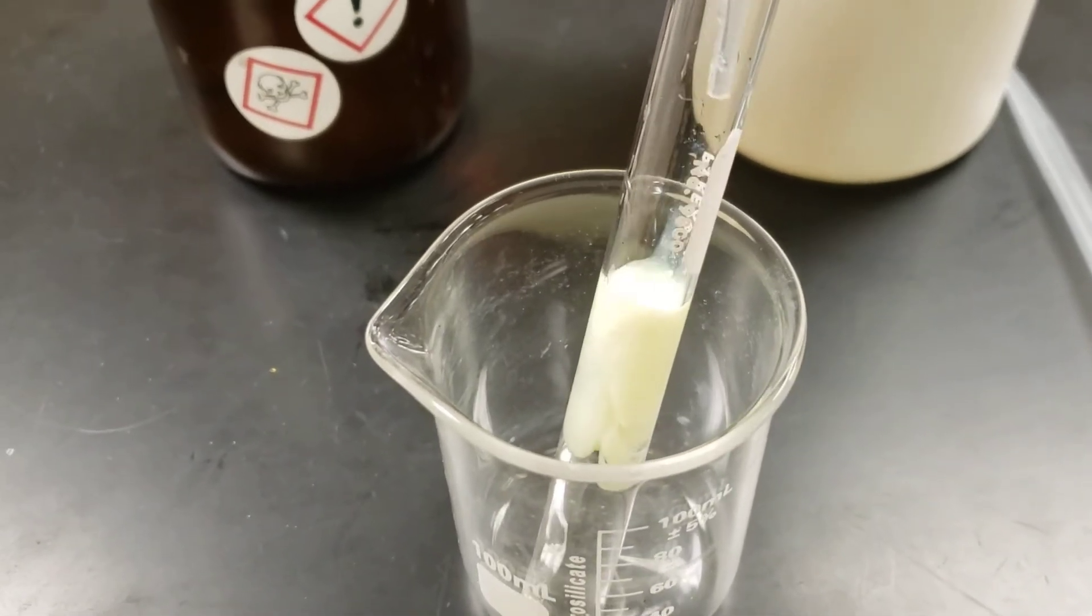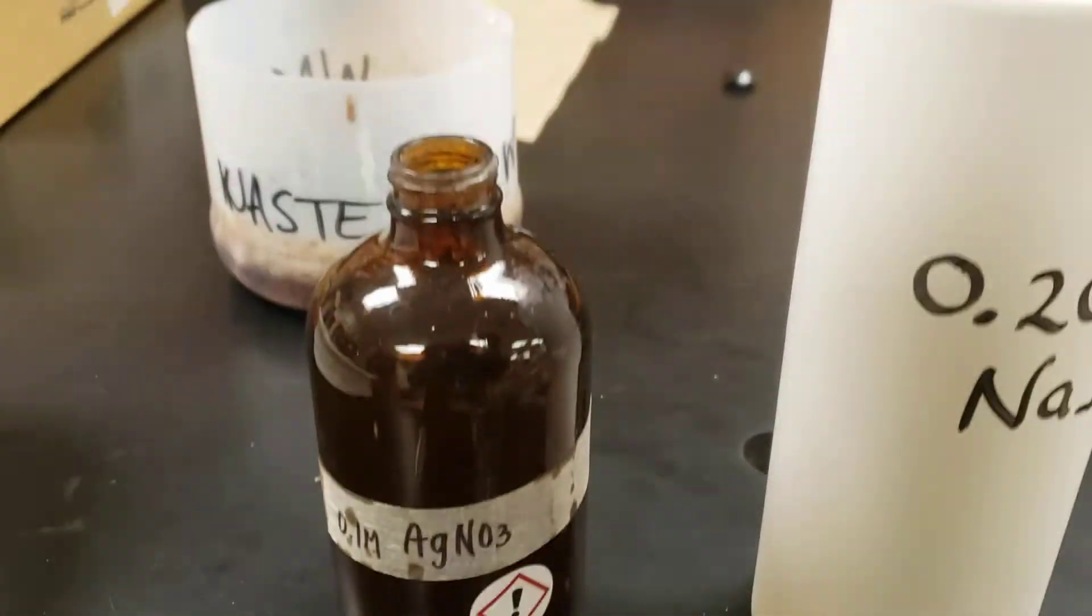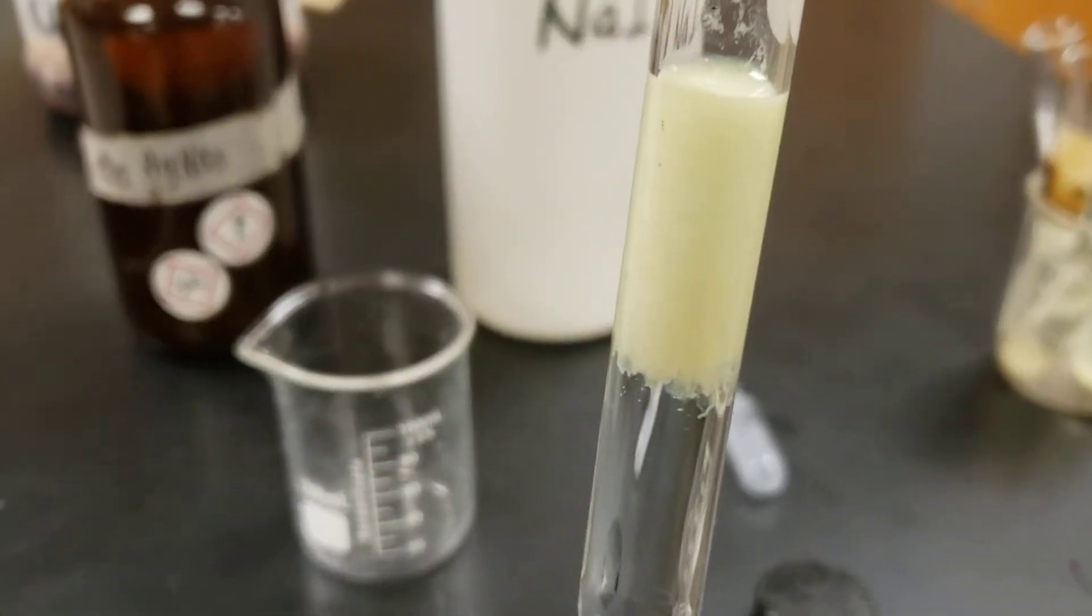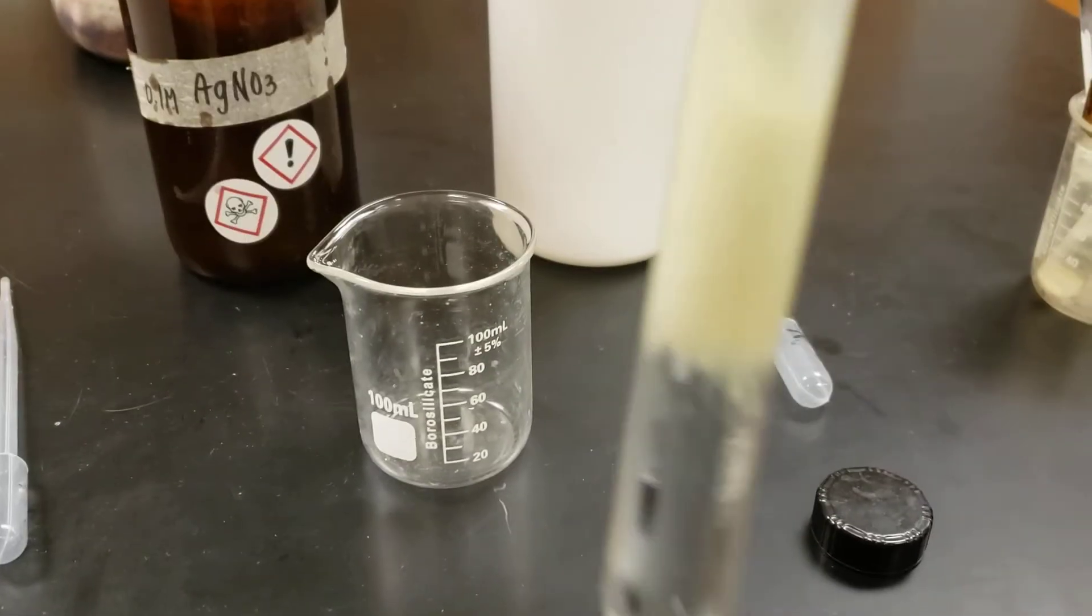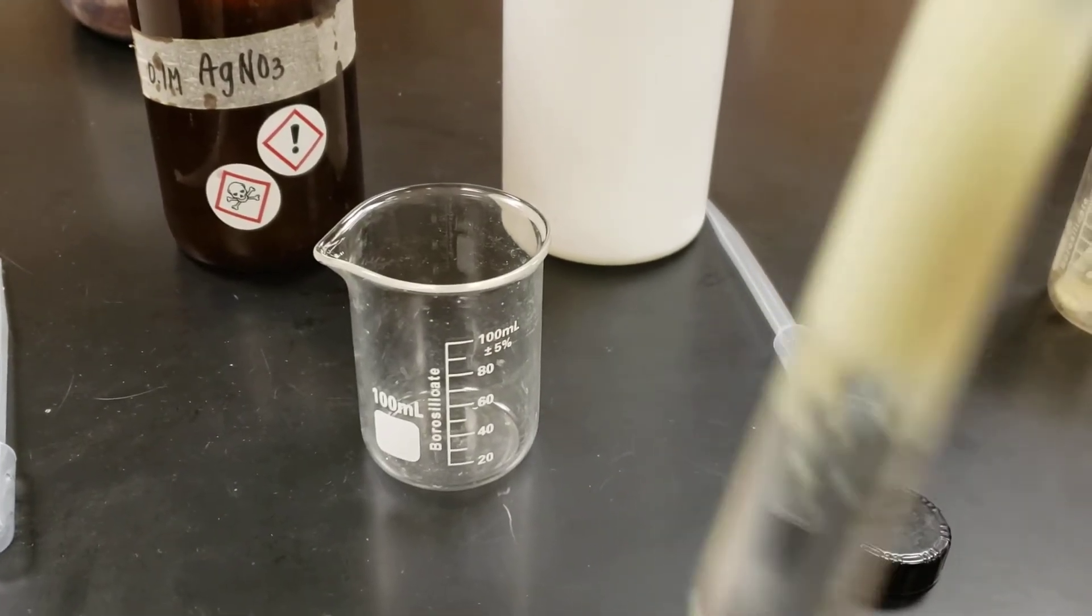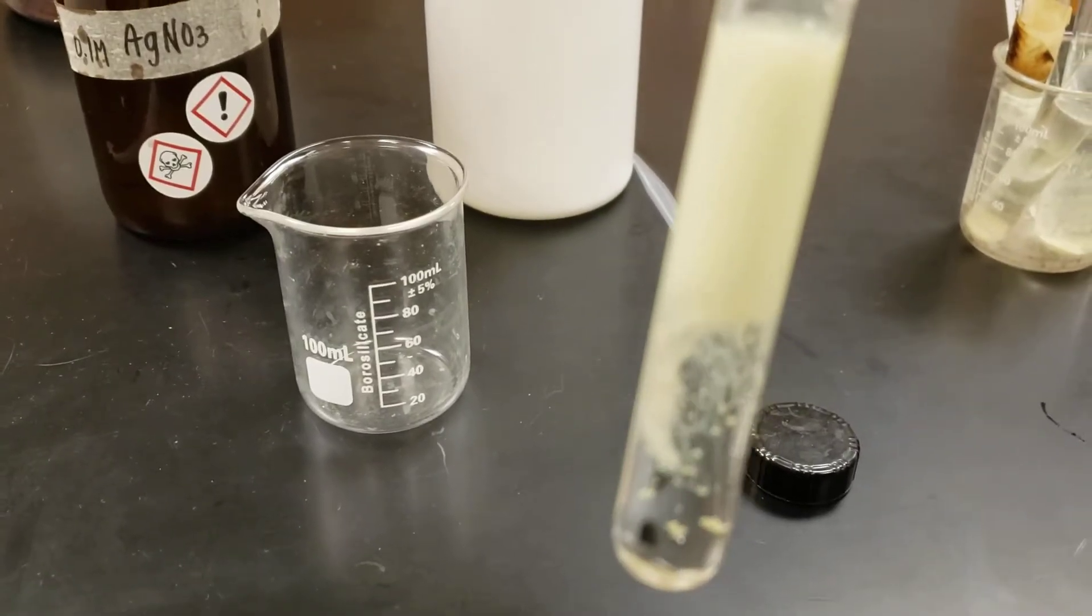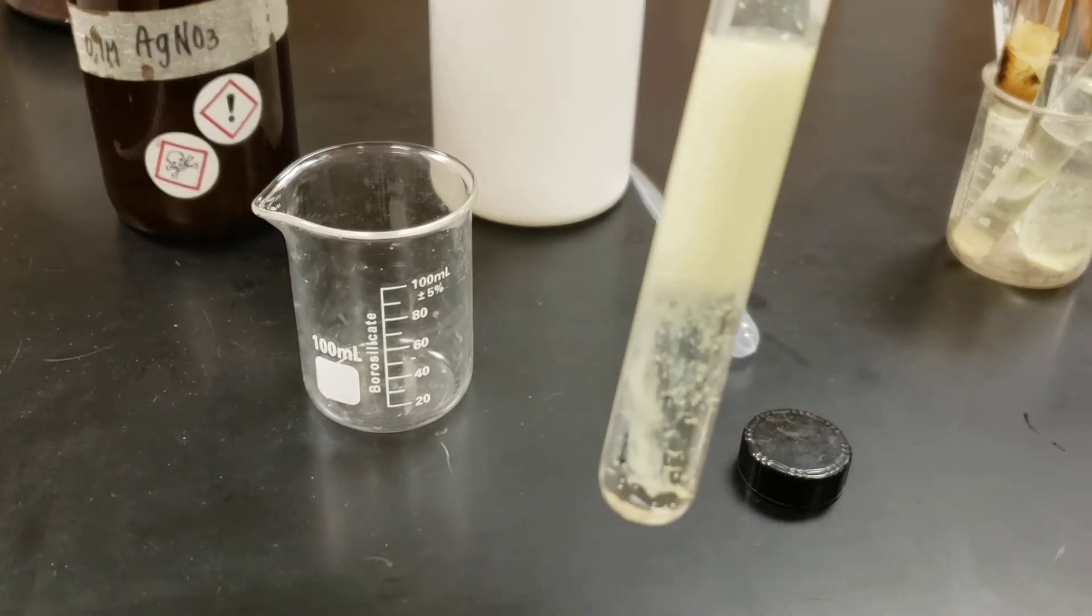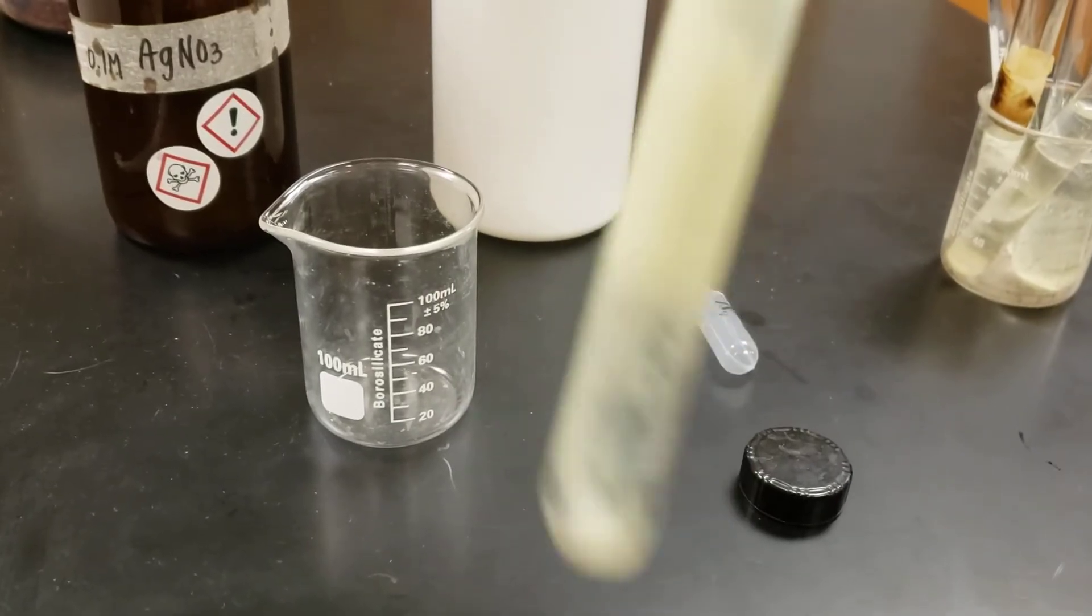You see it has a distinct yellow color. It takes quite a while to mix this, but you see things falling to the bottom. I mixed two aqueous solutions together, and whenever we get that cloudiness, that's signaling that we have a precipitation forming.